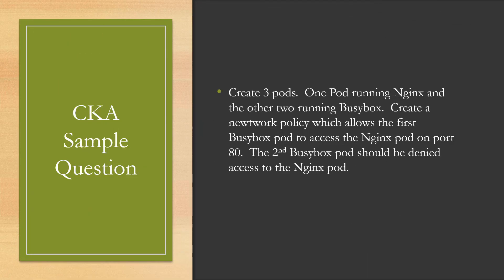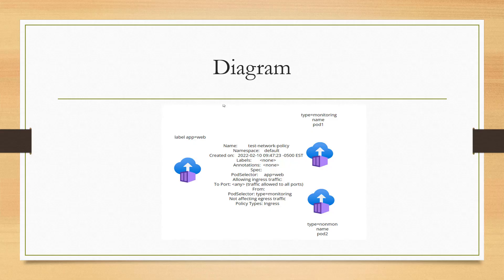The question: create three pods — one pod running NGINX and the other two running BusyBox. Create a network policy which allows the first BusyBox pod to access the NGINX pod on port 80. The second BusyBox pod should be denied access to the NGINX pod. I'll create a diagram to help understand what the question is and how I'm going to go about solving it.